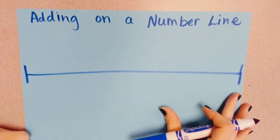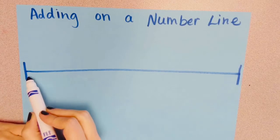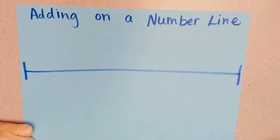Hi guys! Today we're going to learn how to add on a number line. You first just need to make a line on your paper. And today we're going to start with numbers 0 to 10.